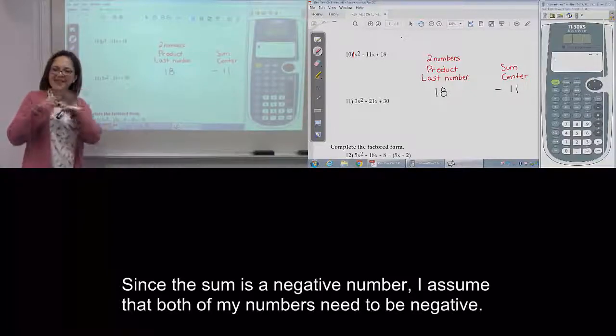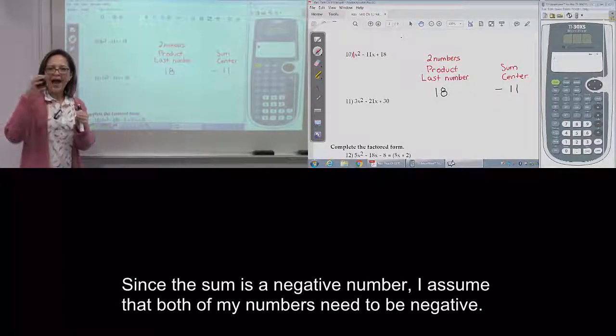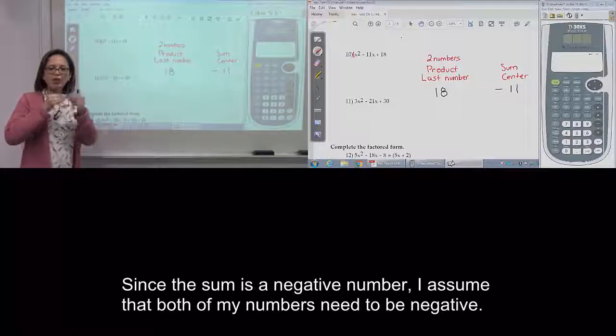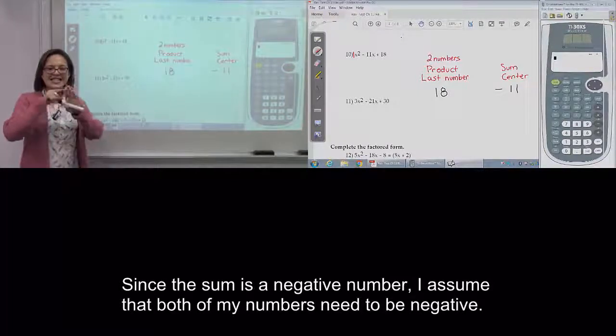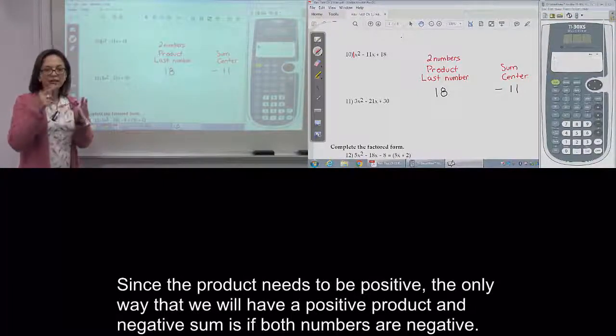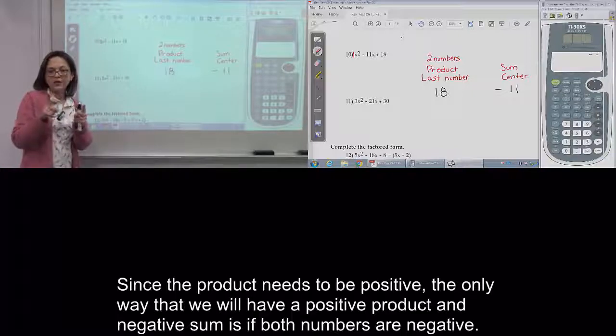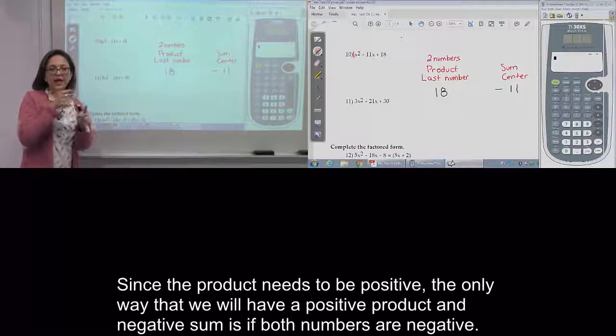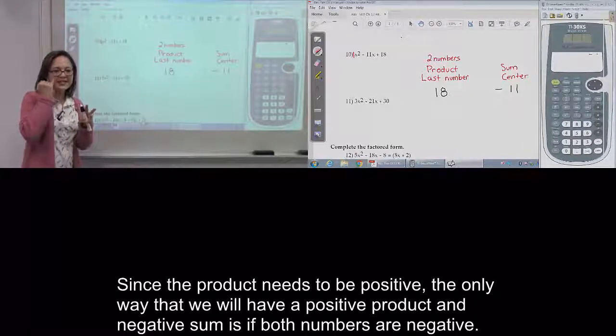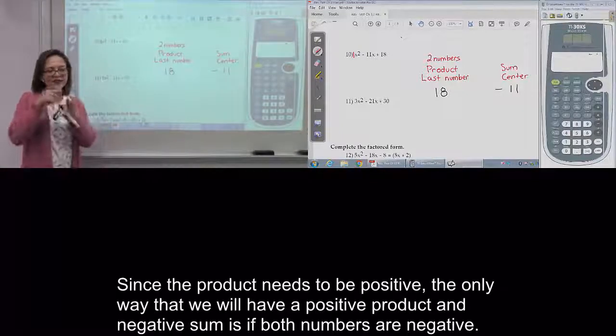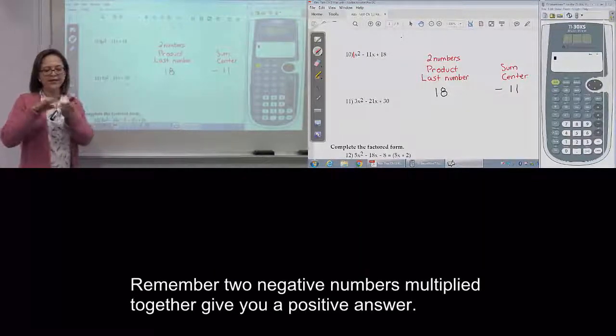Since the sum is a negative number, I assume that both of my numbers are going to be negative, because the product also needs to be a positive number. And the only way this is going to happen is if both are negative, because a negative and a negative becomes a positive.